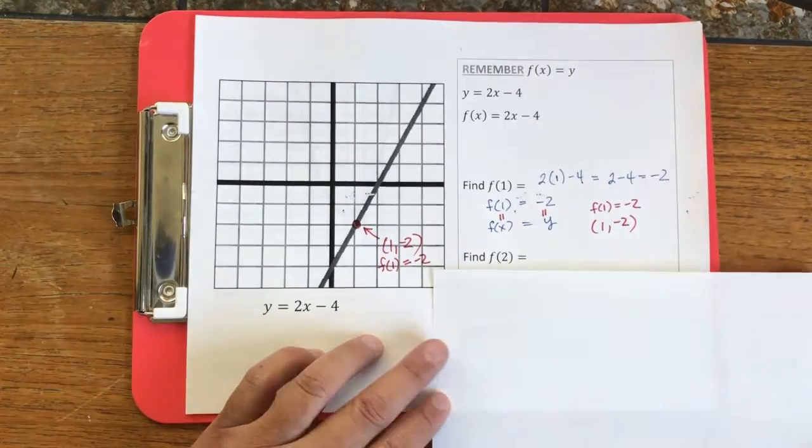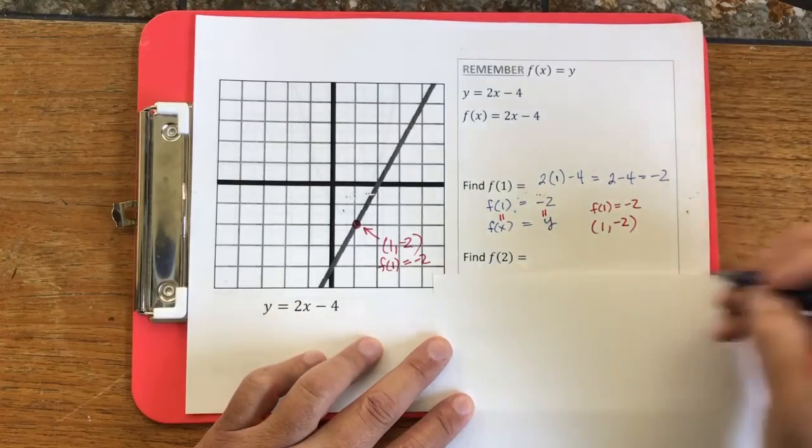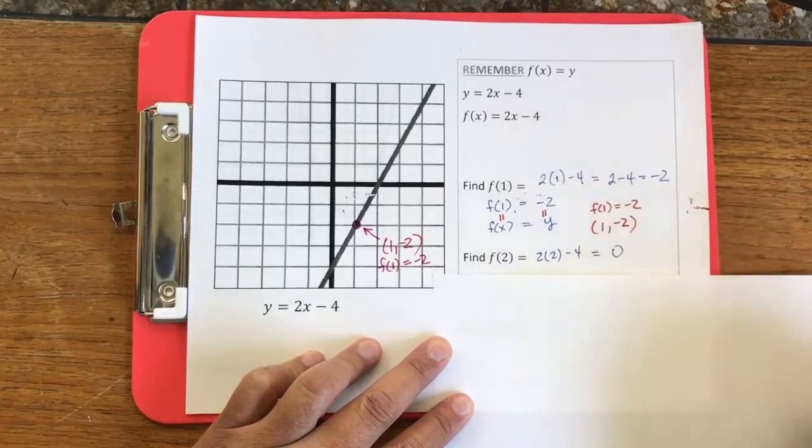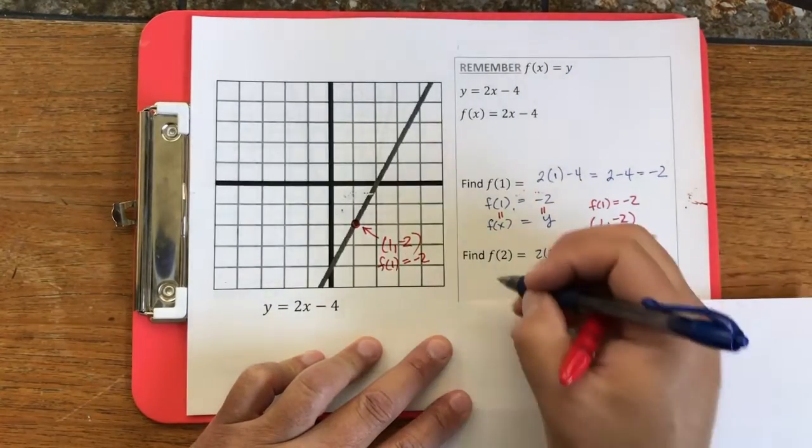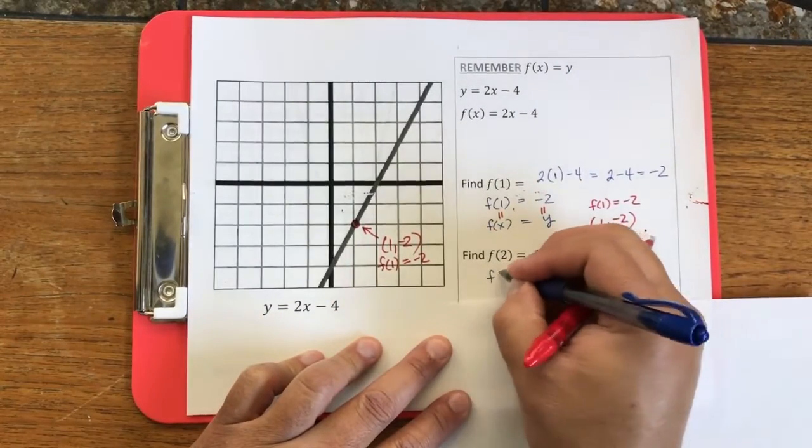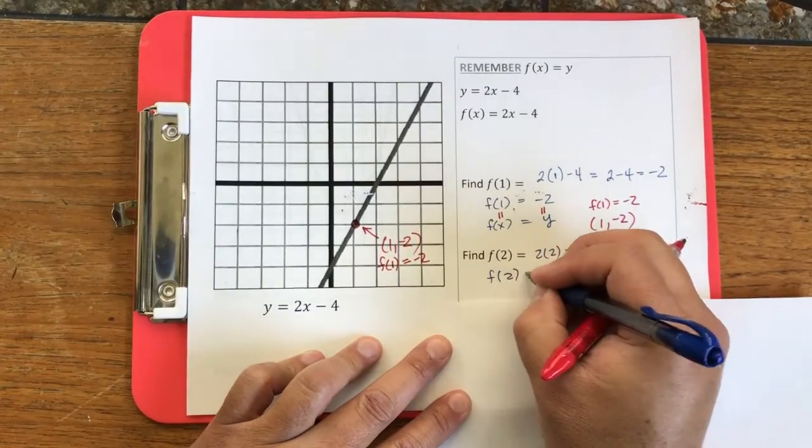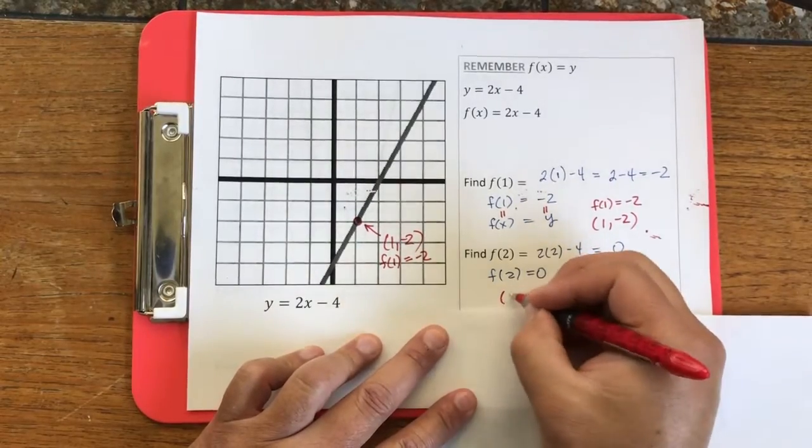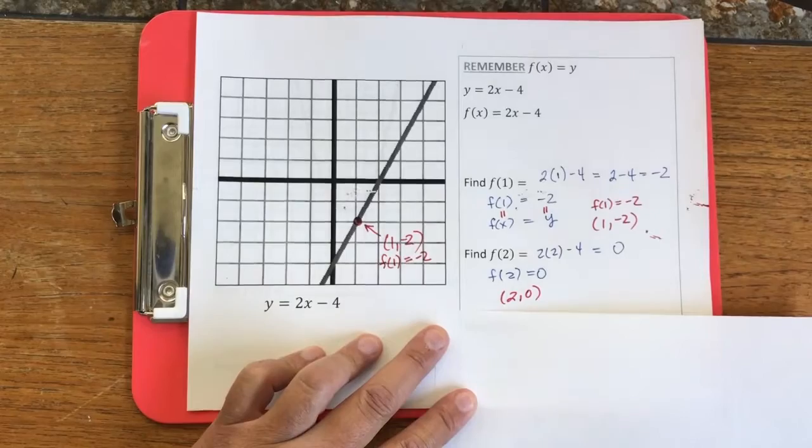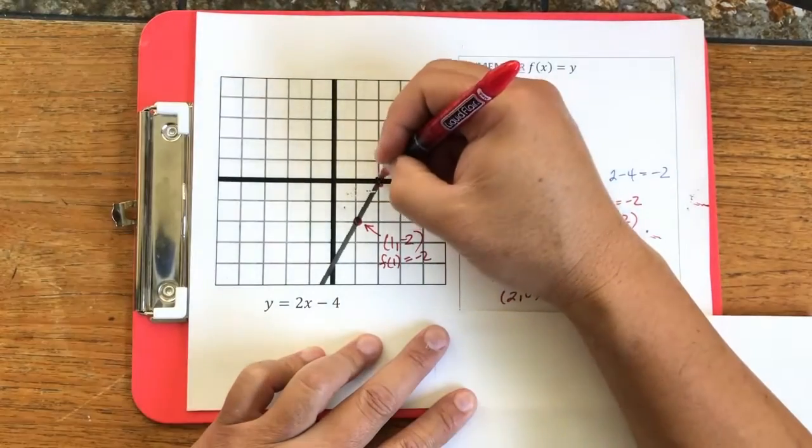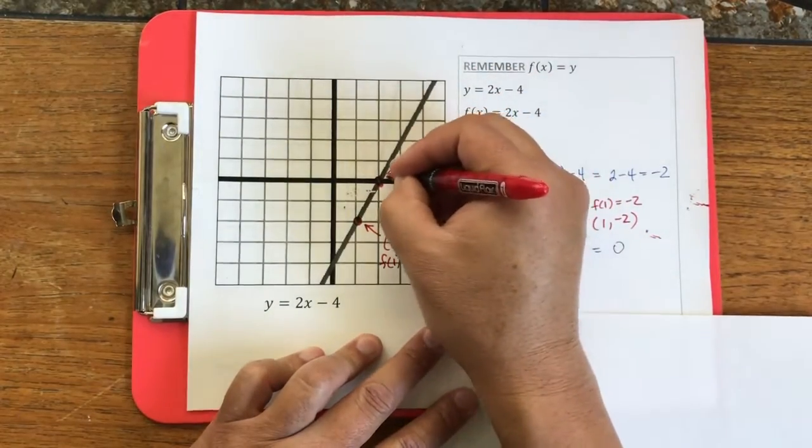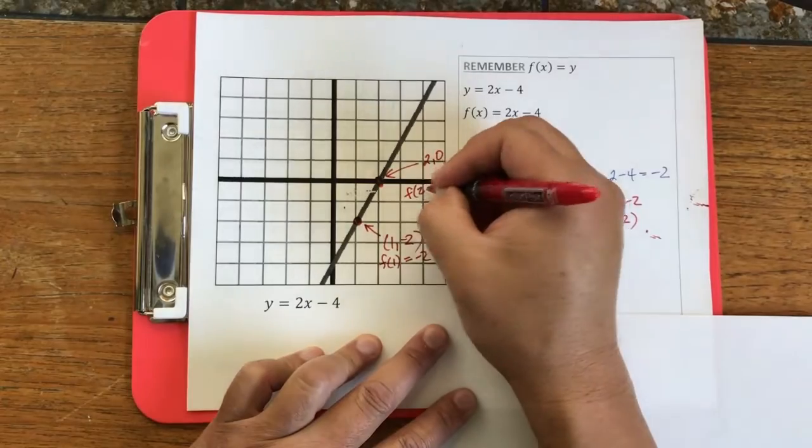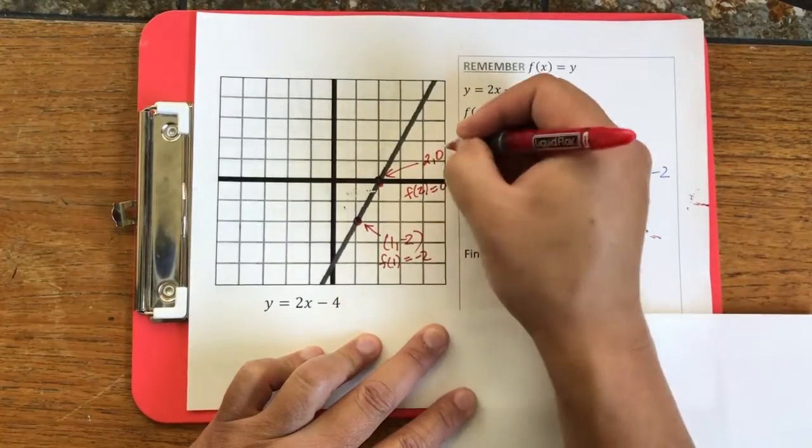Now what if I ask you to find f of 2? Let's try the same computation. 2 times 2 minus 4 equals 0. So now we have this idea that f of 2 equals 0, which means that the point 2 comma 0 is on this line.